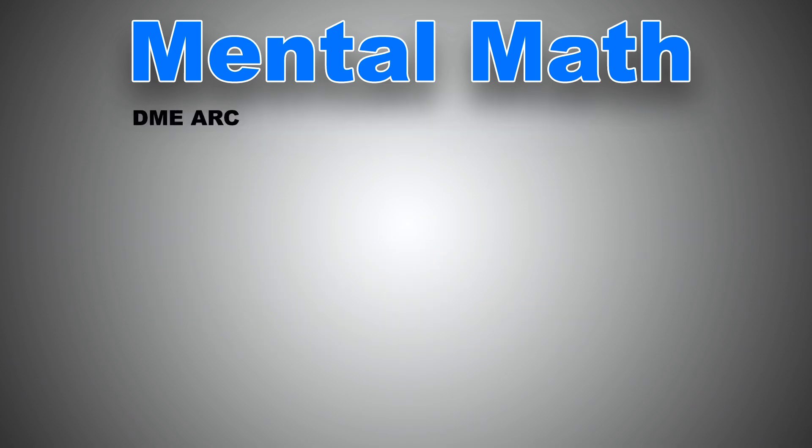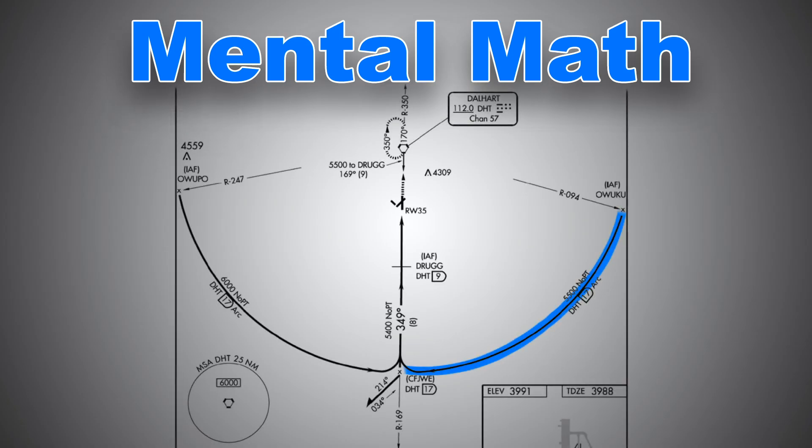All right, this brings us to the last one, DME arc. Assuming you guys already know what DME arc is, by the way, this is a favorite question by pilot recruiters to ask in an interview. What is the distance between these two radials? For better understanding, let's go straight to the first example. What is the approximate distance between radial 094 and radial 169? The first thing to keep in mind is that most DME arcs are in the range of 15 nautical miles from the VOR nav aid.